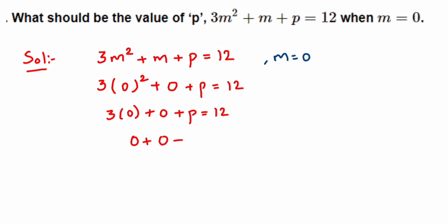So here we'll get 0 + 0 + p = 12. When you add any number to 0, your answer will be the same number. So when you add 0 to p, you will get p itself, so p = 12.